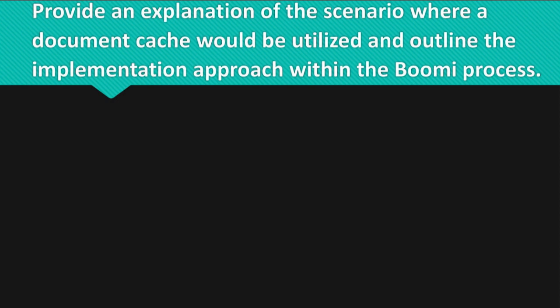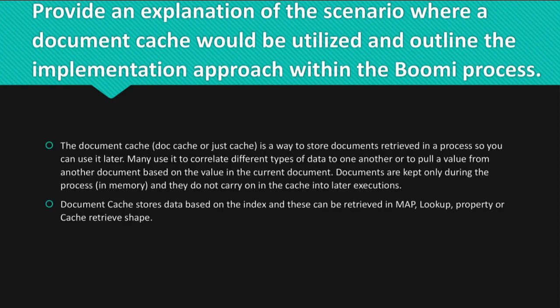Question: Provide an explanation of the scenario where a document cache would be utilized and outline the implementation approach within the Boomi process. Answer: The document cache — dot cache or just cache — is a way to store documents retrieved in a process so you can use them later. Many use it to correlate different types of data to one another, or to pull a value from another document based on the value in the current document. Documents are kept only during the process, in memory, and do not carry on into later executions.